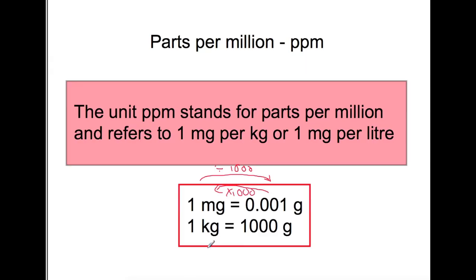The other conversion we need is between kilograms and grams. One kilogram equals 1000 grams, so multiplying by 1000 converts kilograms to grams, and dividing by 1000 converts grams into kilograms.